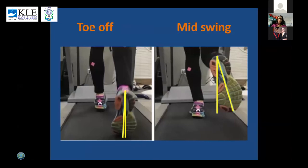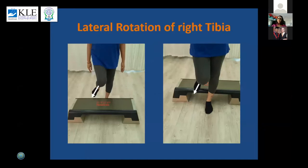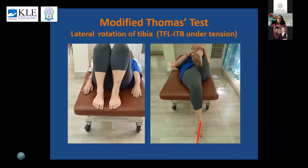In some patients, at toe-off things seem normal, but in mid-swing the tibia rotates laterally in an uncontrolled manner. Lateral rotation of the tibia can also be observed as patients ascend and descend stairs. Very often, the TFL and ITB are tight or stiff. On the modified Thomas test, the foot moves in the lateral direction because of the tibia — this is another test to check lateral rotation of tibia, which is not possible when the hip and knee are flexed.